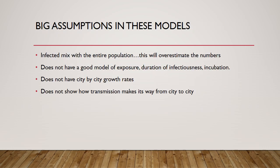There are some assumptions in these models. The first is that the infected mix with the entire population, which will overestimate the number — so this is pretty much a worst-case scenario. We don't have a really good model of exposure, the duration of infectiousness, or the incubation period. I don't have city-by-city growth rates, which include transmission pathways from city to city. All of which will change these numbers and model outputs. But these still give you a general idea of how serious the problem actually is.